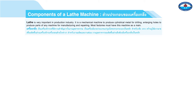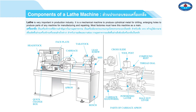Most factories must have this machine. Its main components include: headstock, faceplate, carriage, tailstock, lead screw, bed, apron, quick change box, bench, cross slide, tool post, compound rest, thread dial, carriage handwheel, power feed lever, half nut lever, and parts of the carriage apron.